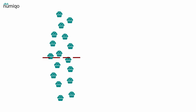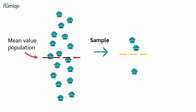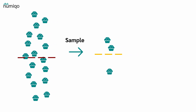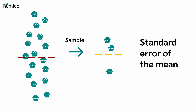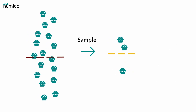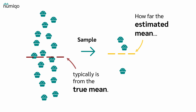In our example, we estimated the mean value of the population with this sample. Now we can ask, how good is this estimation? In this case, we would calculate the standard error of the mean, because we want to know how accurate the estimated mean is. Therefore, the standard error of the mean tells us how far the estimated mean typically is from the true mean.